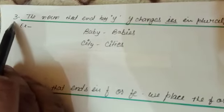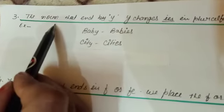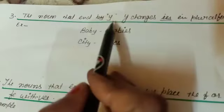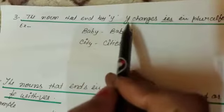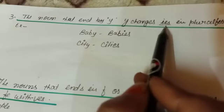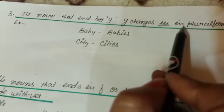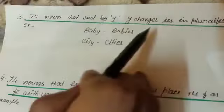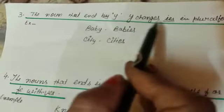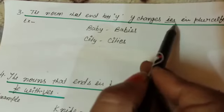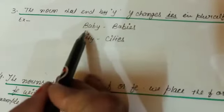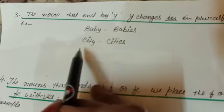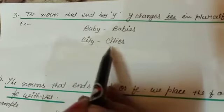Rule number 3: nouns that end in Y change in plural form by adding IES. Example: baby → babies, city → cities.